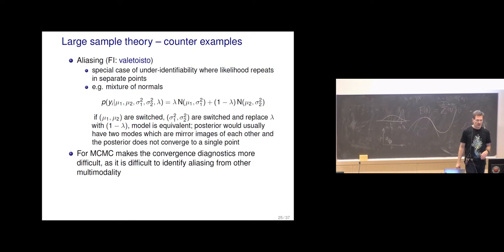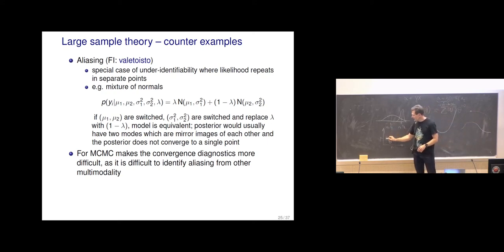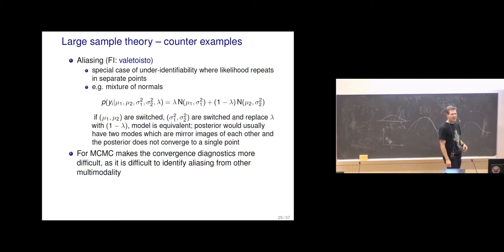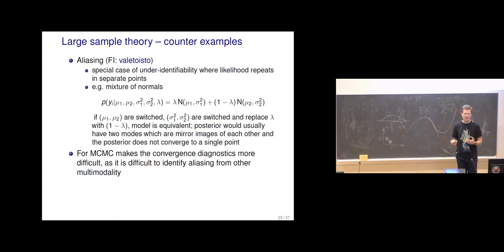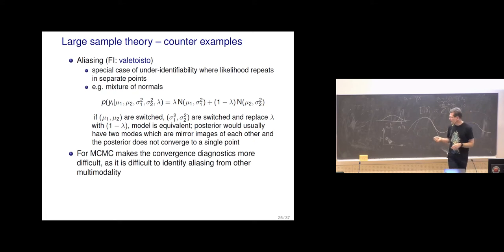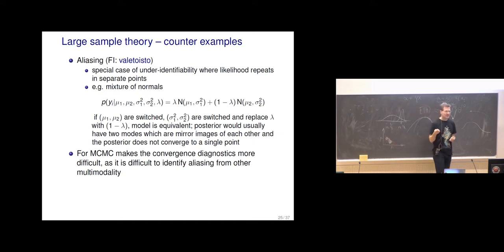Aliasing is challenging for MCMC, as any multimodal case with clearly separated modes is. It makes convergence diagnostics difficult: if chains start from random points, some chains may get stuck in one mode and others in another. The R-hat diagnostic would say the chains are not mixing, and we don't know if that's okay. Even if the modes are just mirror images, the switching between modes can be so slow that convergence diagnostics are still problematic.